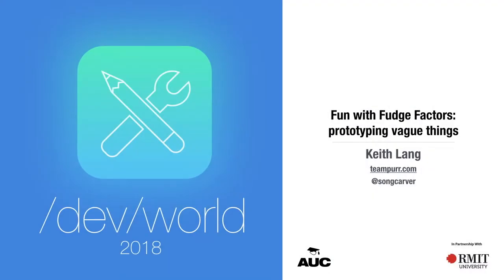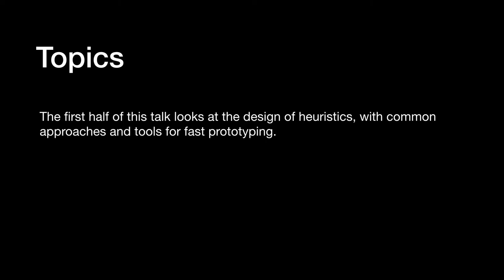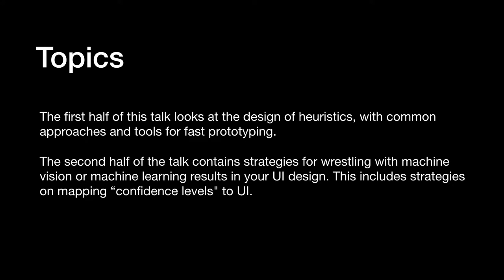Hi, I'm Keith. Thanks for coming, I really appreciate it. I'm gonna throw so much stuff at you guys — I hope your minds are ready for accepting all that information. So the topics: there are kind of two pieces. I'm gonna start talking about heuristics and common approaches for prototyping, and then also a little bit about — let's say you've got machine learning input coming in — how do I actually do something that's a good experience with that data.